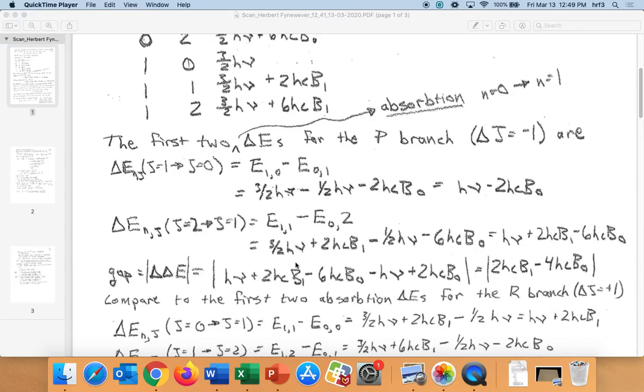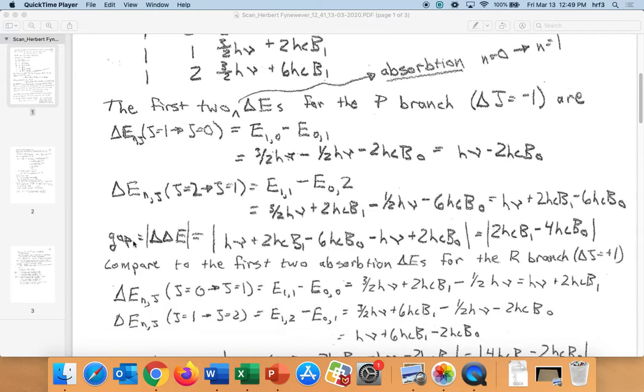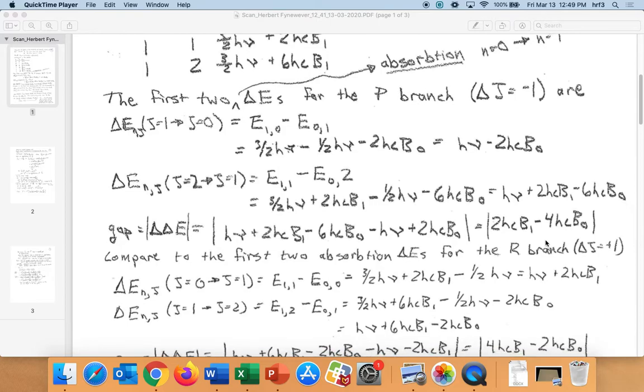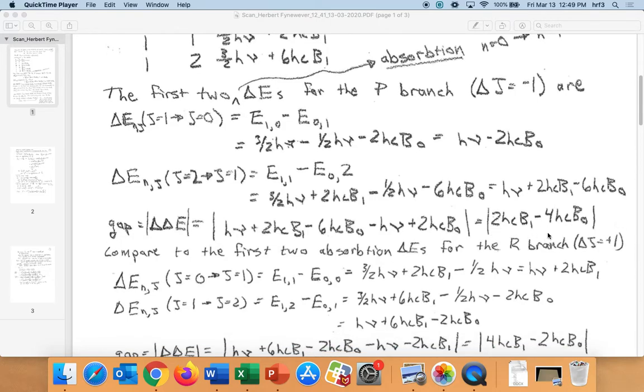So now the gap would be the distance between those two lines in the P branch for the absorption. These are all going to be absorption vibrationally. The gap then is a difference in the ΔE, so a ΔΔE. I'm just subtracting this one from this one. I'll take the absolute value because we're looking at just the magnitude of the gap between the two, and that's what you get.